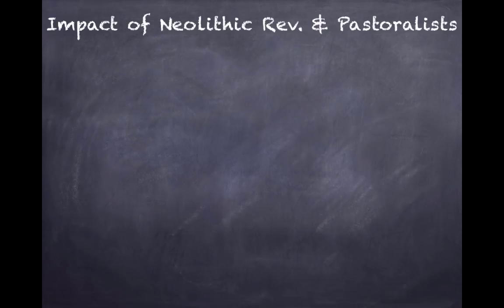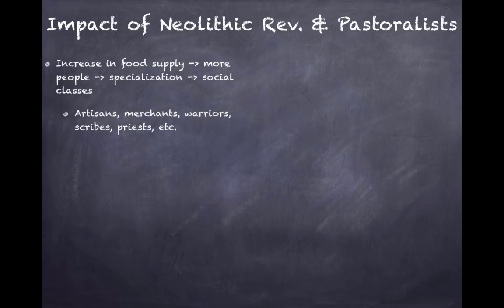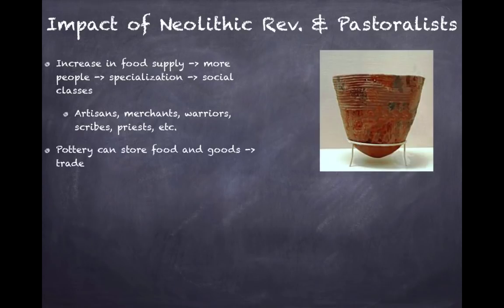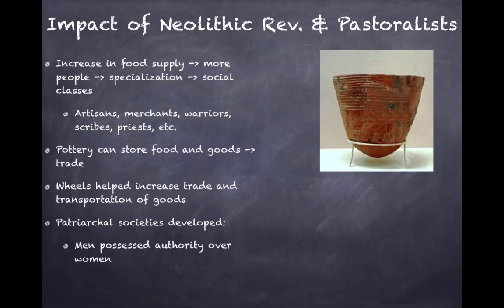The impacts of the Neolithic revolution include an increase in food supply, which leads to more people. More people leads to specialization — because there's so much food, people can now do jobs other than farming. That specialization leads to social classes such as artisans, merchants, warriors, scribes, and priests. Pottery could store food and goods, allowing for trade between cultures, and the wheel helped increase trade and transportation. Patriarchal societies also developed, where men possessed authority over women.